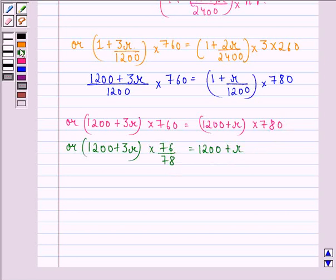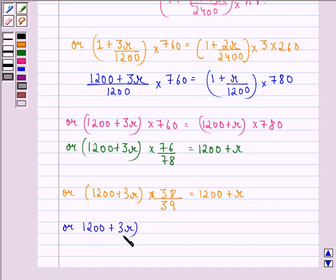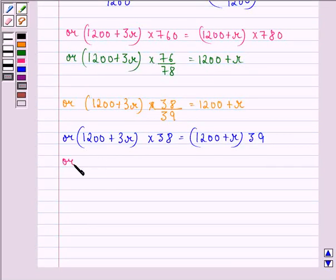76/78 simplifies to 38/39. So (1200 + 3R) × 38/39 = 1200 + R. Or (1200 + 3R) × 38 = (1200 + R) × 39. Now on opening the brackets...